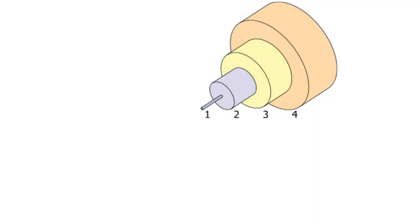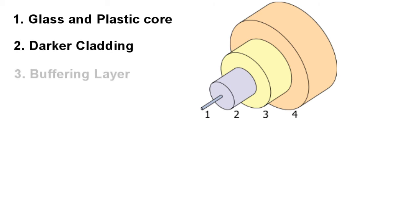When a fiber optic cable is made, they first use a glass and plastic core in the center. Then there is a darker cladding to help reflect the light rays. Then there is a buffering layer and finally a jacket to protect the whole cable. Then the fiber optic cable is ready to transport data.